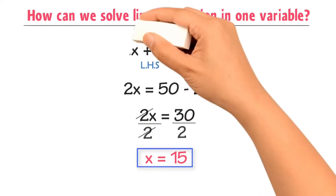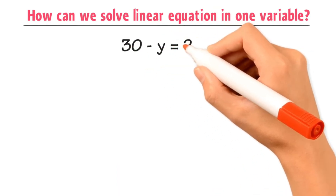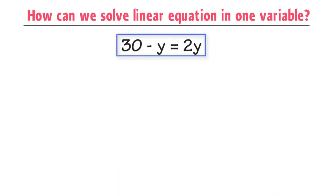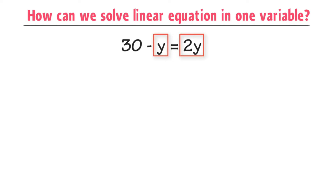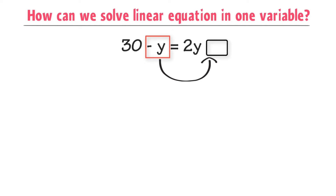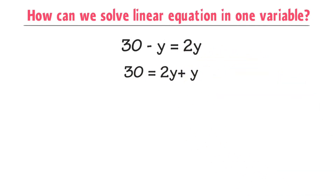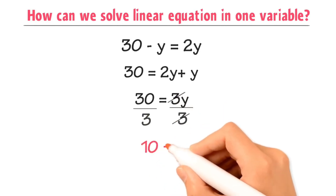Let me give you another example: 30 minus y is equal to 2y. There are three terms in this equation, but two of them contain the same variable y. Hence, we arrange the equation so that y becomes one term by shifting minus y from the left-hand side to the right-hand side. As a result, we get 30 is equal to 2y plus y, or 30 is equal to 3y. Dividing both sides by 3, we get y is equal to 10.